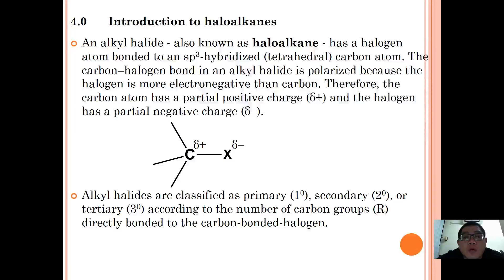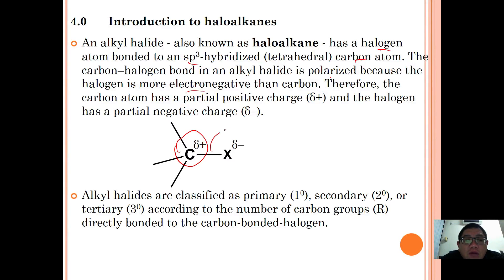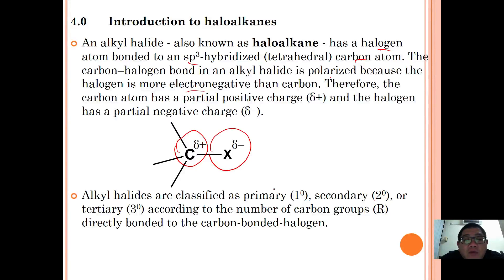An alkyl halide, also known as a haloalkane, has a halogen atom bonded to an sp3 hybridized carbon atom. The carbon–halogen bond in an alkyl halide is polarized because the halogen is more electronegative than the carbon. Therefore the carbon bears a partial positive charge and the halogen bears a partial negative charge, making that carbon susceptible to nucleophilic attack. We will look more at nucleophilic reactions of haloalkanes later.